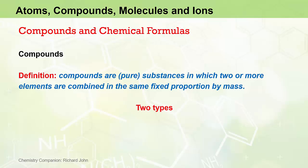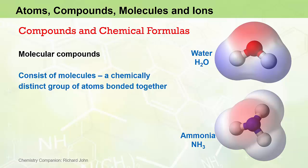There are two types of compounds we need to consider as part of our studies: molecular compounds and ionic compounds. A molecular compound is a compound that consists of molecules, and a molecule is a chemically discrete and chemically distinct group of atoms bonded together.